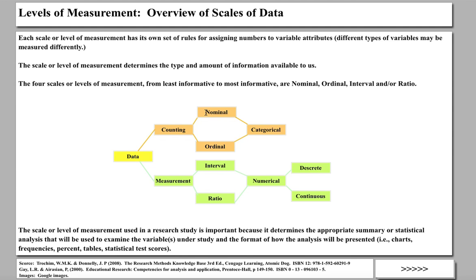These scales are in order. The nominal scale is the weakest, giving us the least amount of information. Ordinal is a little stronger than nominal, interval is stronger still, and ratio is the strongest — giving us the most information. The four scales from least to most informative are nominal, ordinal, interval, and ratio.